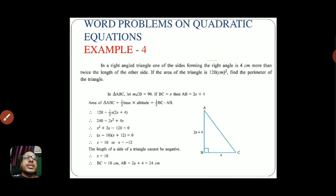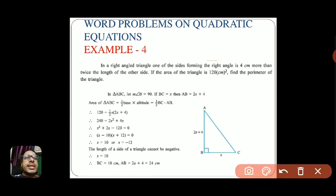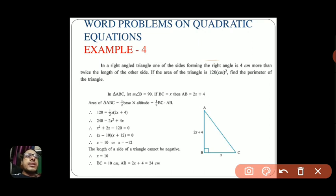Example four: in a right-angle triangle, one of the sides forming the right angle is four centimetres more than twice the length of the other side. If the area of the triangle is 120 cm², find the perimeter of the triangle. First, draw the right-angle triangle and note what is given.